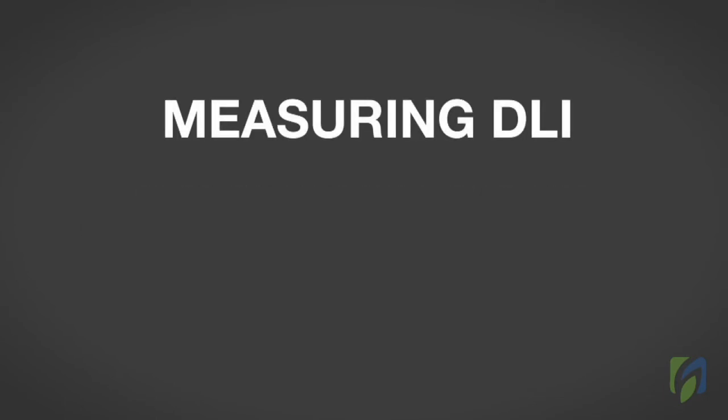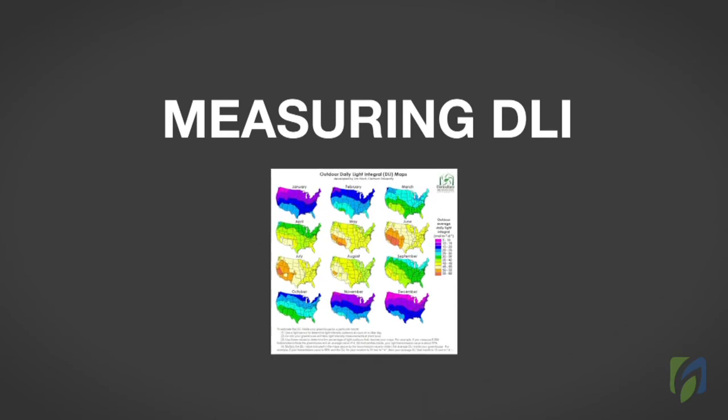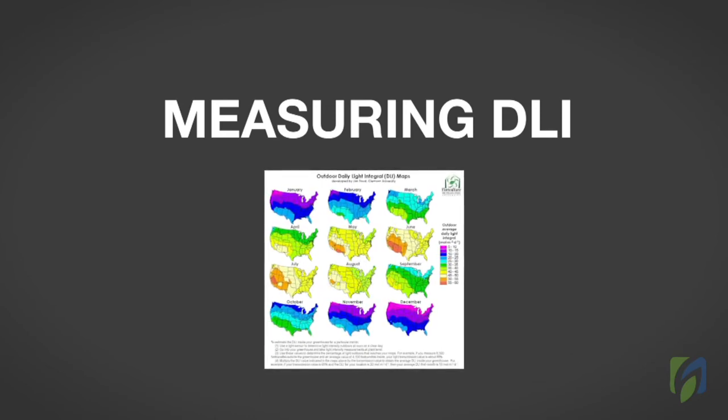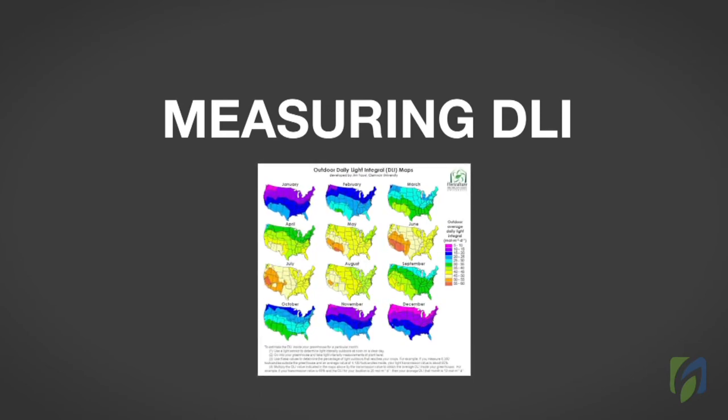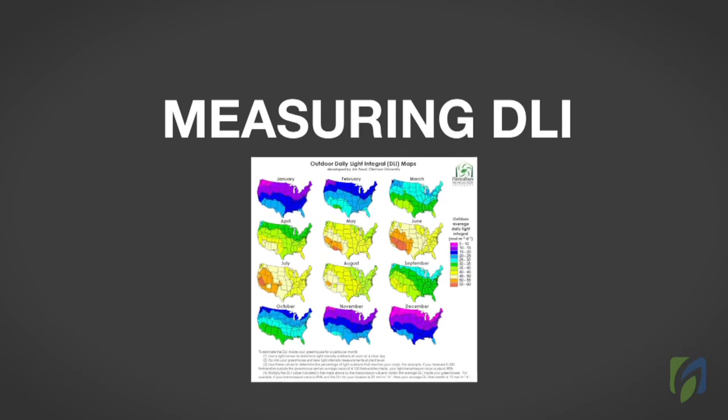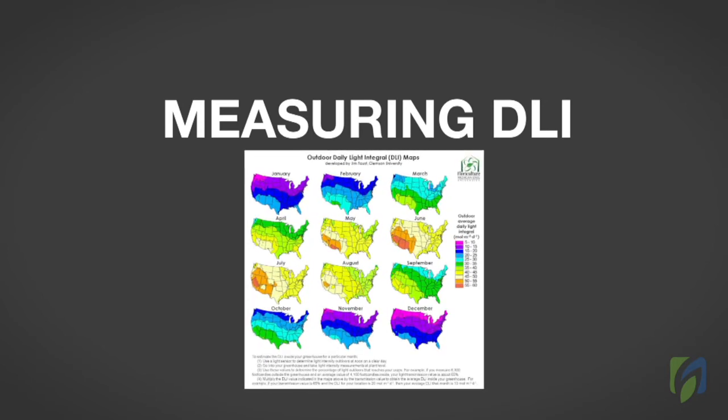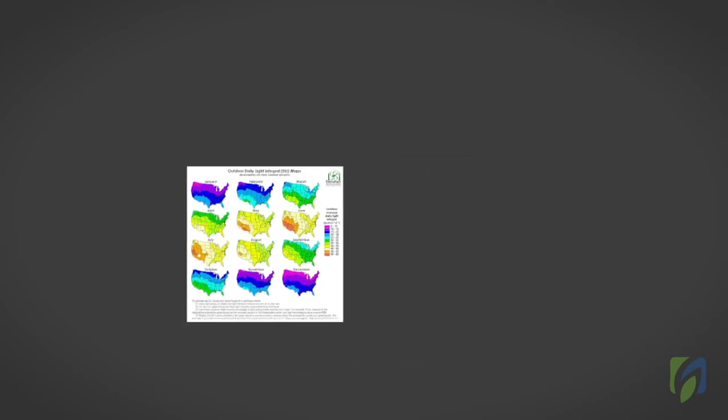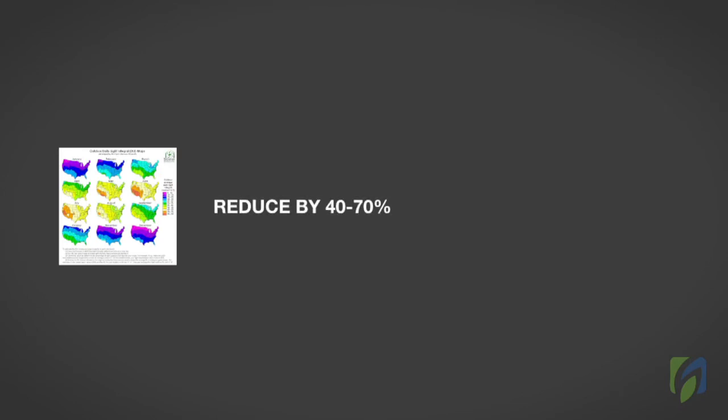Measuring Daily Light Integral. As discussed earlier, you can estimate the outdoor daily light integral levels by locating your operation on the DLI maps developed by researchers at Clemson University. The maps provide the monthly outdoor DLI throughout the United States. Remember that these DLI values should be reduced by 40 to 70% to provide you with a very rough estimate of the DLI values in your greenhouse and received by your crops monthly.